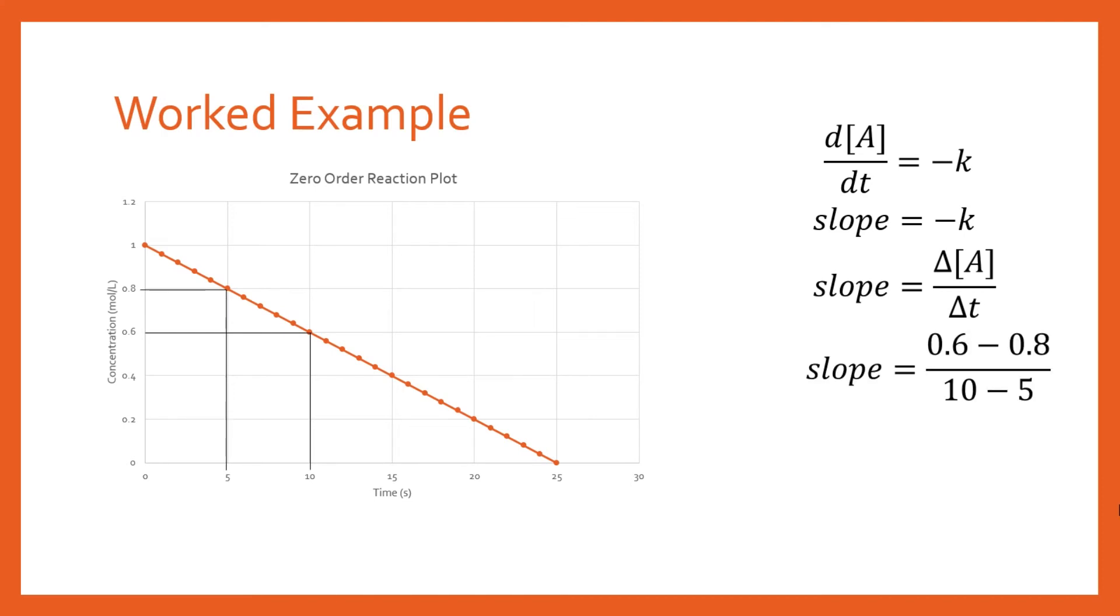Substitute these values into the formula, making sure to do it correctly. Remember that the gradient formula is (y₂ - y₁)/(x₂ - x₁). Start with the second point, 0.6, subtract the first point, 0.8, and divide by 10 minus 5. This gives slope = (0.6 - 0.8)/(10 - 5).